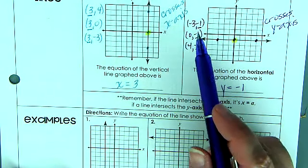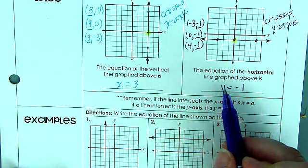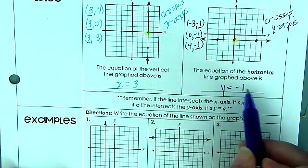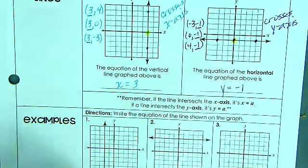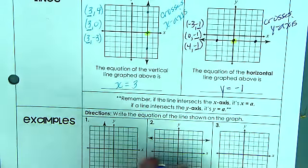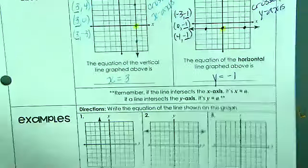You're going to notice that they all have negative 1 as the y-value. Every point is going to have negative 1 as the y-value, which further confirms my equation is y equals negative 1. That's applied to all of these questions right here, 1 through 6.